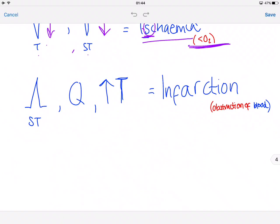For infarction, which is obstruction of blood and more invasive, we would have ST elevation, presence of Q waves, and raised troponin. A very silly mnemonic but trust me it works.